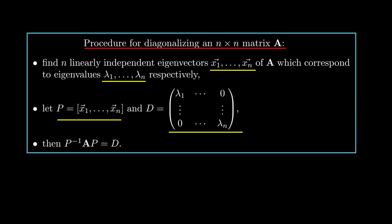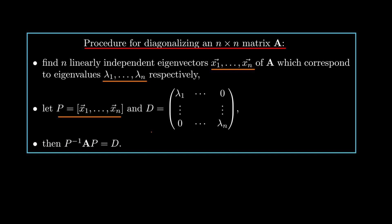Going back to our general method: to diagonalize a matrix we find n linearly independent eigenvectors — done — and their corresponding eigenvalues. Then the matrix P is formed from those eigenvectors as columns, and the matrix D is the diagonal matrix with the eigenvalues. It's as easy as that.